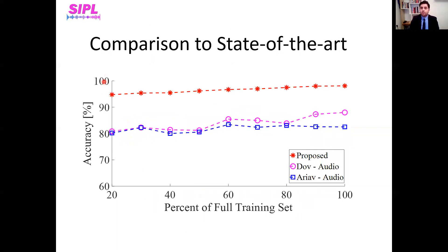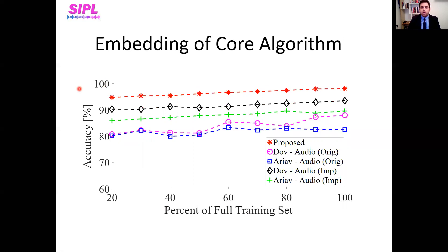Moreover, we can compare our method to competing methods such as those of Dov and Ariyav. Their performance benchmark-wise is degraded relative to ours. We also propose an experiment in which we implement the concepts used in our research into the architectures of Dov and Ariyav, and show that these core algorithms can significantly improve competing methods — enforcing the point that diffusion maps can capture intrinsic structures of speech and separate them from non-speech frames efficiently, regardless of the specific architecture used. However, our method is still better than the competing ones even with that alteration.